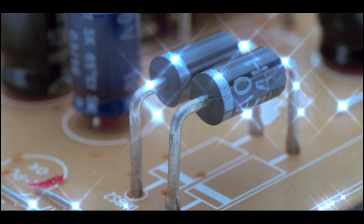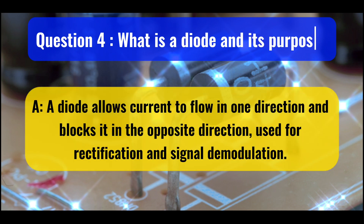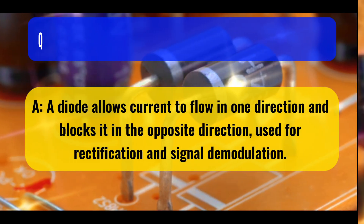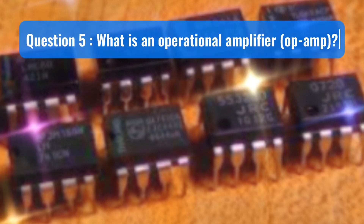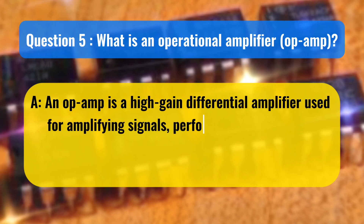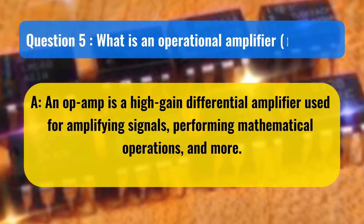Question 4: What is a diode and its purpose? A diode allows current to flow in one direction and blocks it in the opposite direction, used for rectification and signal demodulation. Question 5: What is an operational amplifier (OP-AMP)? An OP-AMP is a high-gain differential amplifier used for amplifying signals, performing mathematical operations, and more.